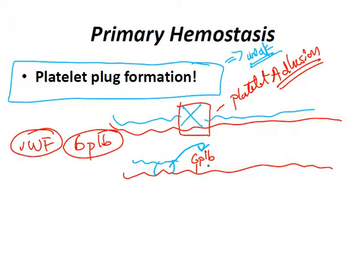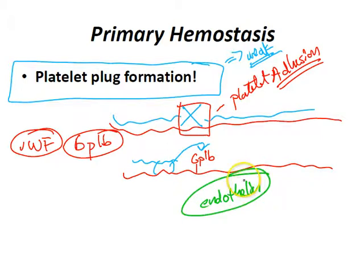For a very brief moment in time, there's an arterial vasoconstriction mediated by something called endothelin — a lot of people don't know this. So when you cut and expose that collagen, it's not like all platelets just start adhering immediately. For a brief second, there's an arterial vasoconstriction mediated by endothelin, which comes from endothelial cells.